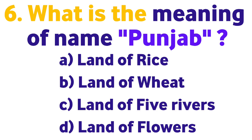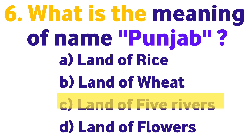Question number six: What is the meaning of the name Punjab? Option A: Land of rice, B: Land of wheat, C: Land of five rivers, D: Land of flowers. Correct answer is C: Land of five rivers.